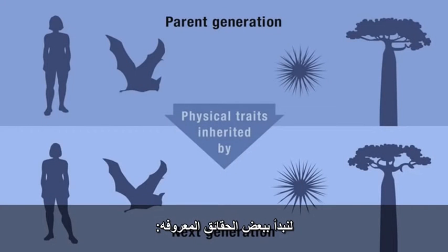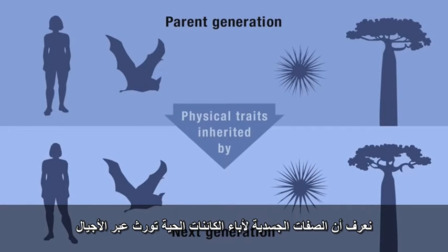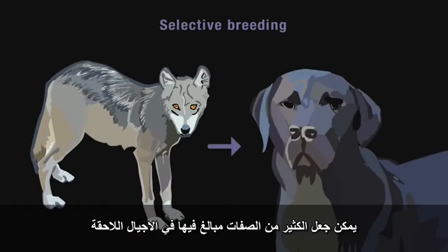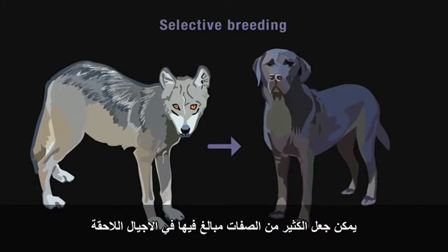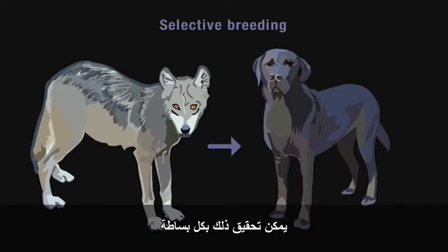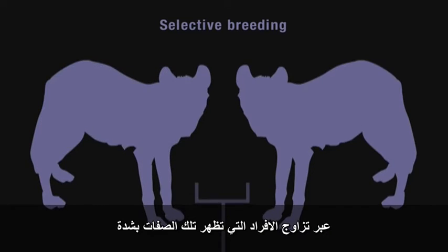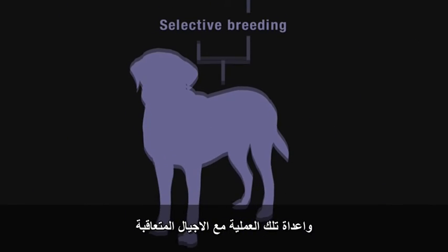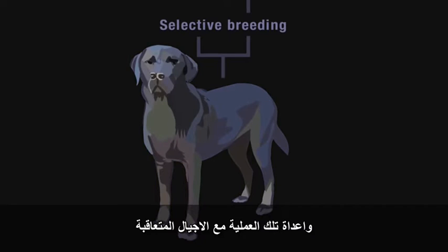To start with some well-known facts, we know that physical traits of parent life forms are inherited by the next generation, and that through the artificial process of selective breeding, many traits can be exaggerated in later generations. This can be achieved fairly simply by mating together individuals that exhibit those traits most strongly and repeating this process with successive generations.